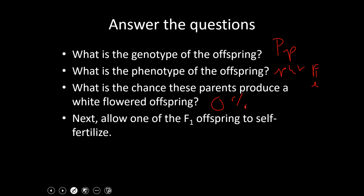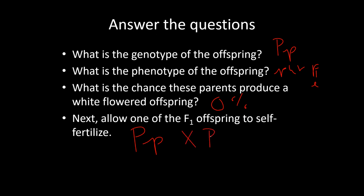Next: allow one of the F1 offspring to self-fertilize. Plants can do that. Every single one of those babies looked like big P little P. If we allow that plant to self-fertilize, it is both the mom and the dad. So our parents for the second round of that cross are both big P little P.